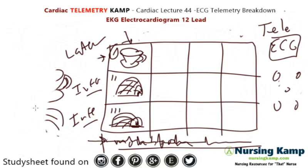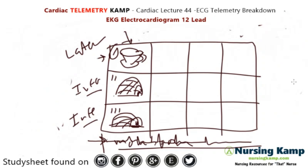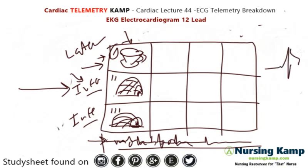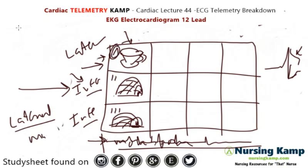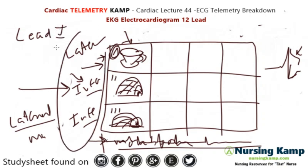What does this truly mean? Why do we need to know that? Well, the principle is this: if somebody has an inferior wall MI, you're not going to see it in lead one — you're going to see it in lead two. So if they have an inferior wall MI, you'll see ST elevations or ST depressions in lead two. If it is a lateral wall MI, you'll see it in lead one for telemetry. That's the language — that's what we're talking about when we're talking about ECG.